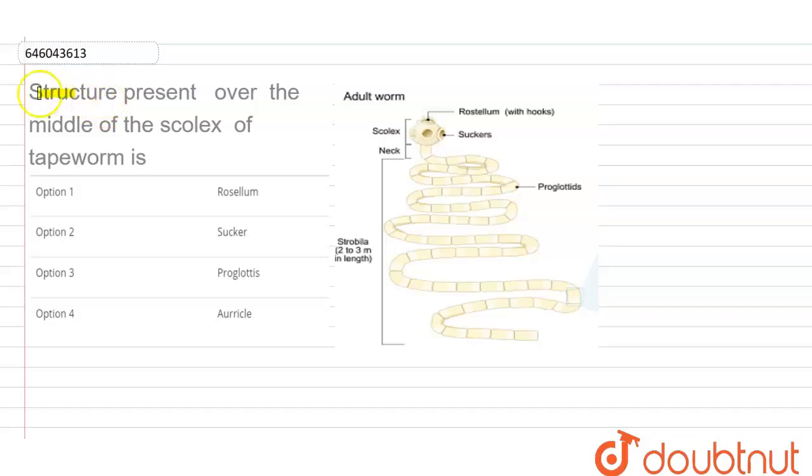Hello students, the question here says that the structure present over the middle of the scolex in the tapeworm is. So when we talk about tapeworm, that is we are basically talking about the Taenia solium.